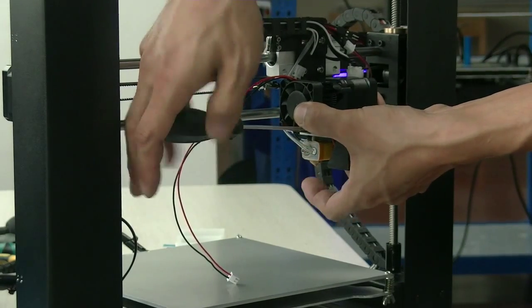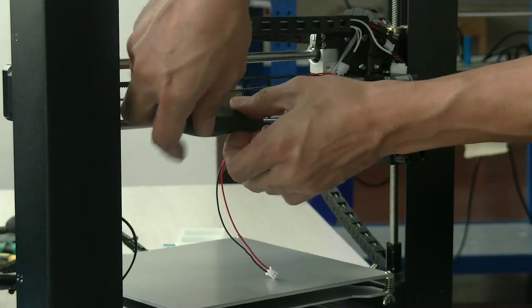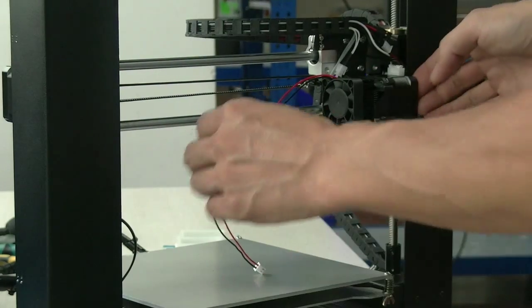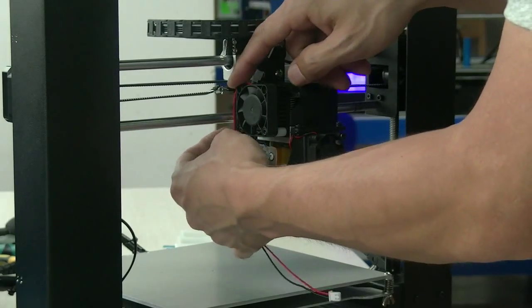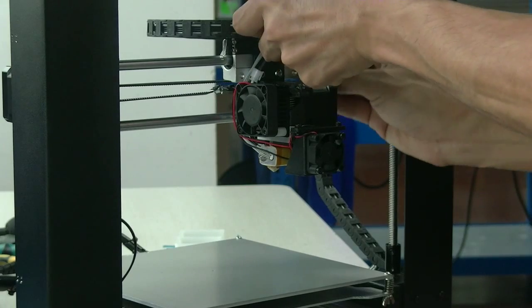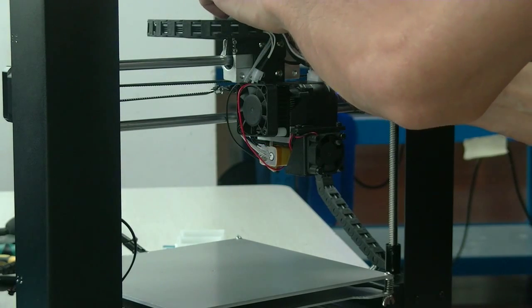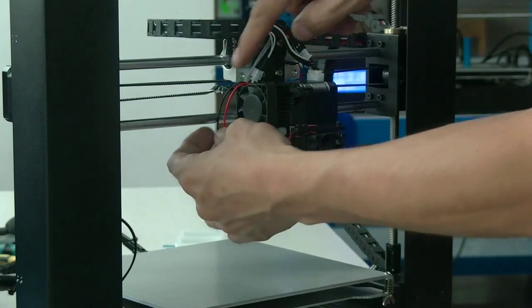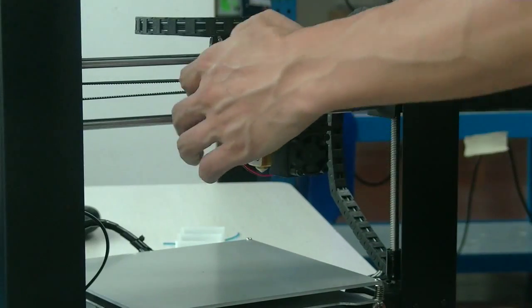The extruder cooling fan is supposed to run all the time because it's connected to the power supply unit directly. And the filament cooling fan is supposed to be controlled by the G code. So it starts according to your requirement, to your setting on the G code. You can set it after three layers or four layers. It will start. It's all just up to you.